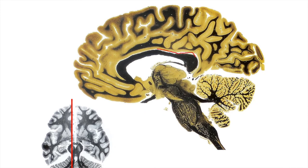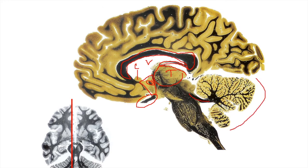Getting closer to the midline, the corpus callosum forms a very recognizable structure. The fornix comes from the hippocampus along the inferior portion of the lateral ventricle. The V-shaped hypothalamus is visible, with the optic nerve below it and the anterior commissure in the side of the hypothalamus. The thalamus sits above. The cerebellum, superior cerebellar peduncle, superior and inferior colliculi, and pons are visible heading down toward the medulla and spinal cord.